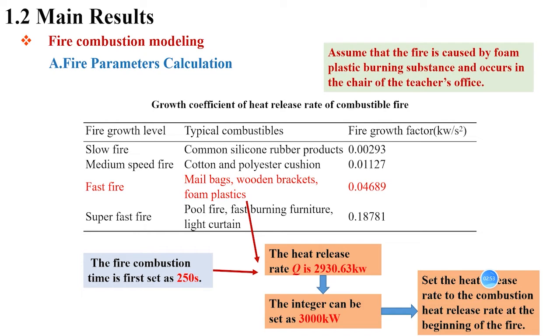Considering that the combustible material is plastic, the fire resource is set as a fast fire. The table shows the growth coefficient of heat release rate of different combustibles in fire, and we take the coefficient of rapid fire for the fire growth.